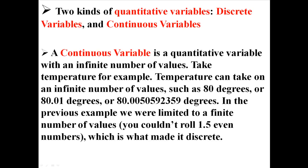Continuous variables are quantitative variables with an infinite number of values. For example, temperature can take on an infinite number of values — like 80 degrees, or 80.01, or 80.00505 degrees. It can stretch out infinitely. In the previous die-rolling example, we were limited to whole numbers like zero, one, and two — you couldn't roll a 1.5 — which is what made that discrete, whereas temperature is continuous because it has an infinite number of possibilities.